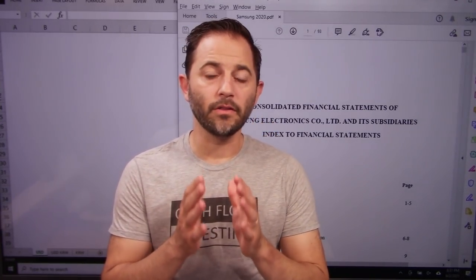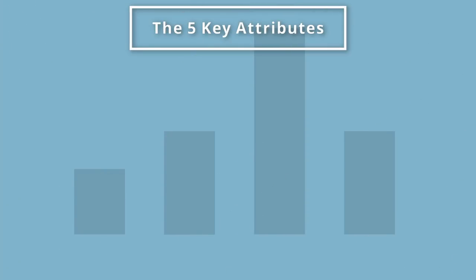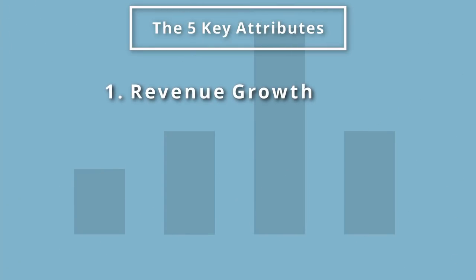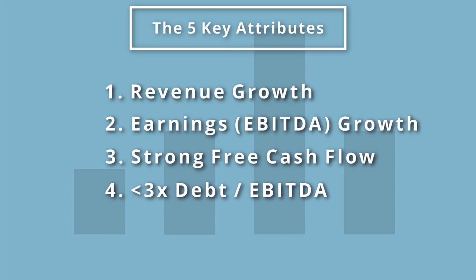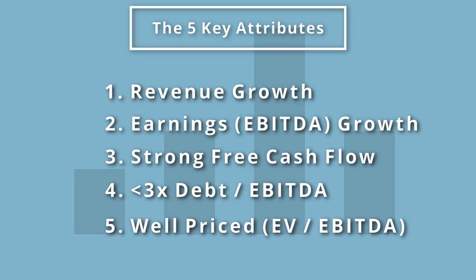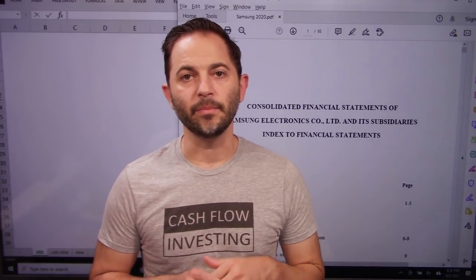Let's dive into Samsung Electronics. Before we do that, let's cover the five key attributes that we use to value all stocks here in this channel. That would be top line revenue growth, earnings growth using EBITDA, strong free cash flow, low debt that's less than three times debt to EBITDA, and a well-priced stock. We use enterprise value to EBITDA as our well-priced metric.